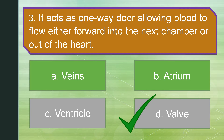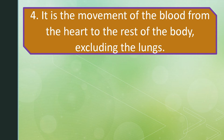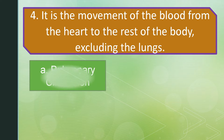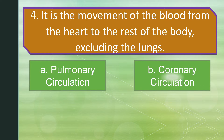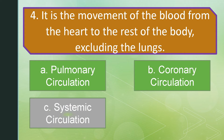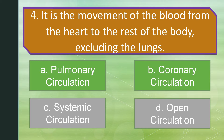Fourth question. It is the movement of the blood from the heart to the rest of the body excluding the lungs. Letter A: Pulmonary circulation. Letter B: Coronary circulation. Letter C: Systemic circulation. Or letter D: Open circulation. The correct answer is letter C: Systemic circulation.